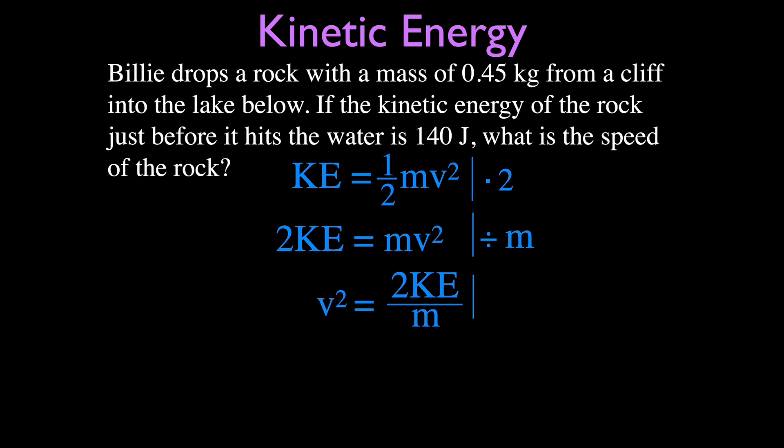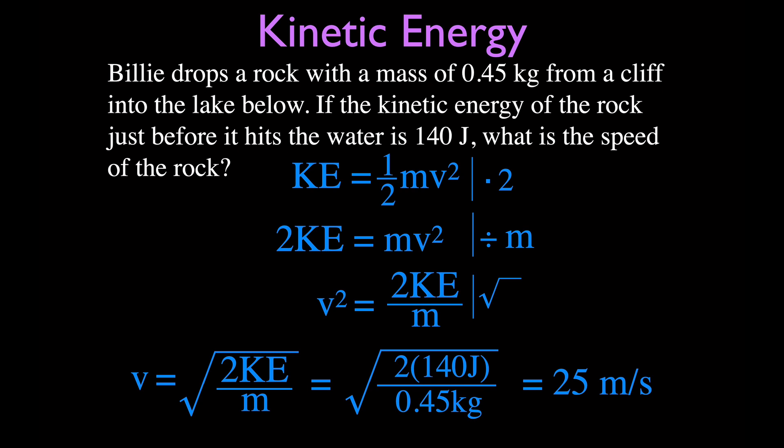So, in order to get rid of the velocity squared or get rid of the squared, we're going to take the square root of both sides. When we do one thing on one side, we've got to do the same thing to the other side. And you can see that if I take the square root of V squared, it's just V. But then I've got to take the square root of 2 times KE divided by M. Which I can now just plug the values in the square root of 2 times 140 divided by 0.45 kilograms.